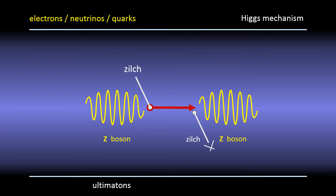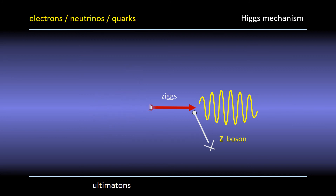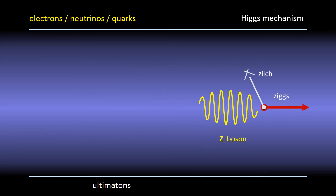We don't have a name for this mixture of Z boson plus zilch. But since it's so central to the Higgs mechanism, Susskind likes to call this quantum state a ziggs. In the standard model, it's this interaction with zilch — this flipping between Z boson and ziggs — that's thought to give this particle its interactive, inertial type of mass.